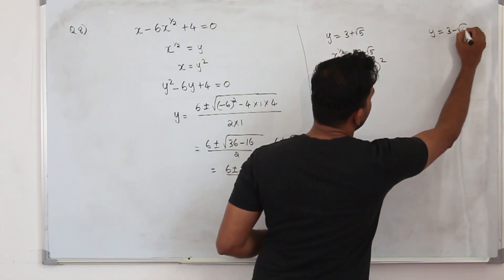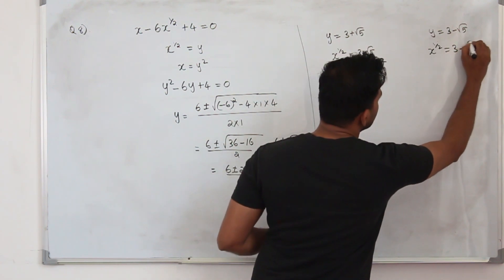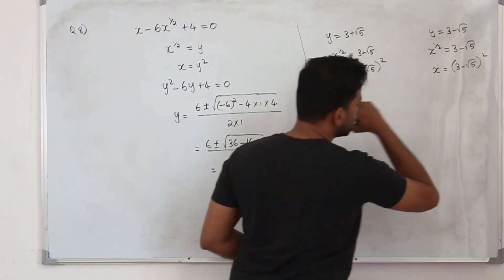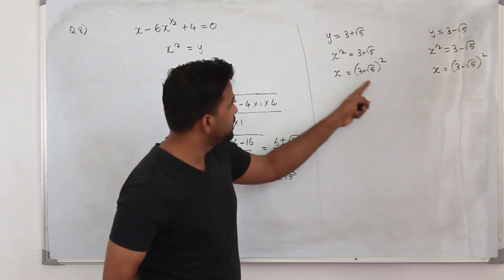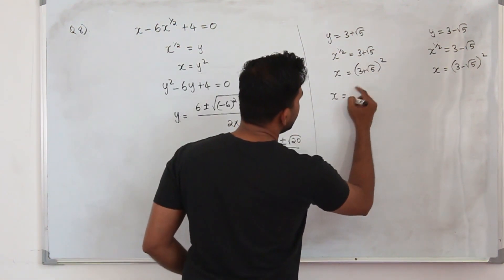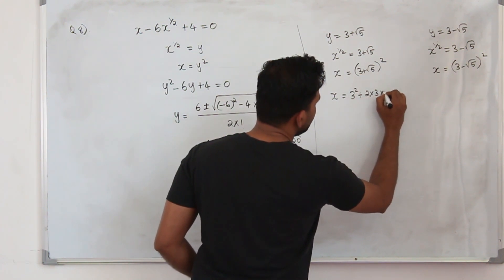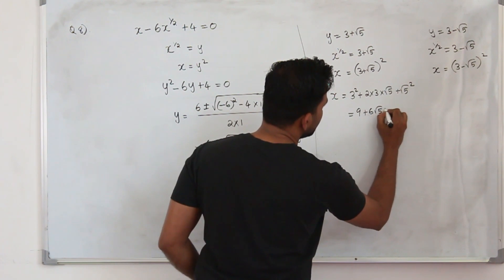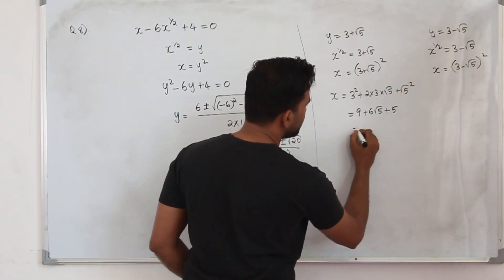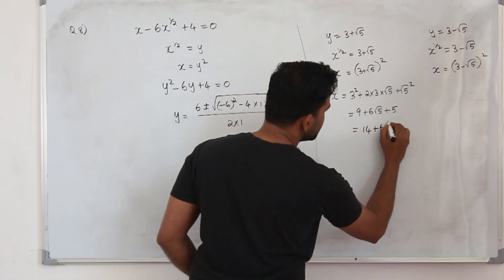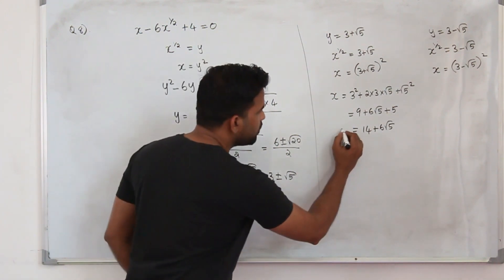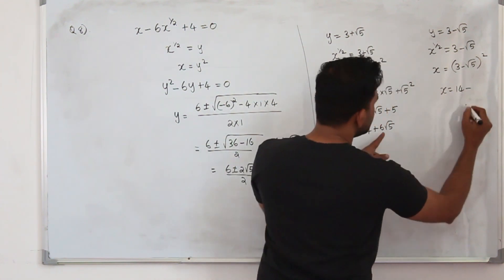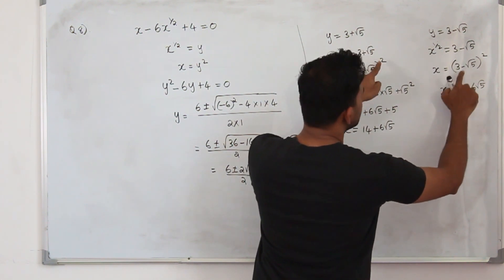Do the same for y equals 3 minus root 5: replace y by x to the power half, square both sides, and x equals 3 minus root 5, the whole squared. Expanding using the identity (a plus b) squared equals a squared plus 2ab plus b squared: x equals 9 plus 6 root 5 plus 5, which is 14 plus 6 root 5. And similarly, x equals 14 minus 6 root 5.